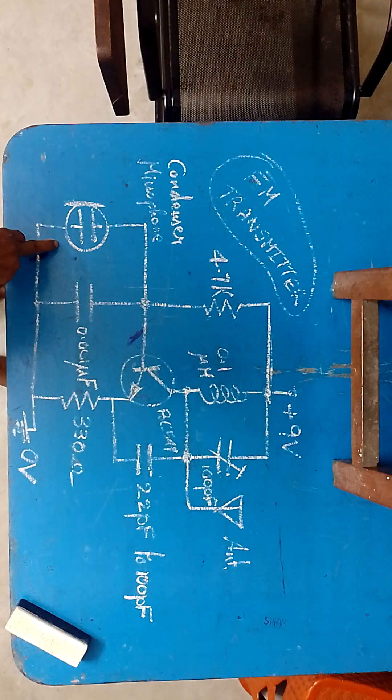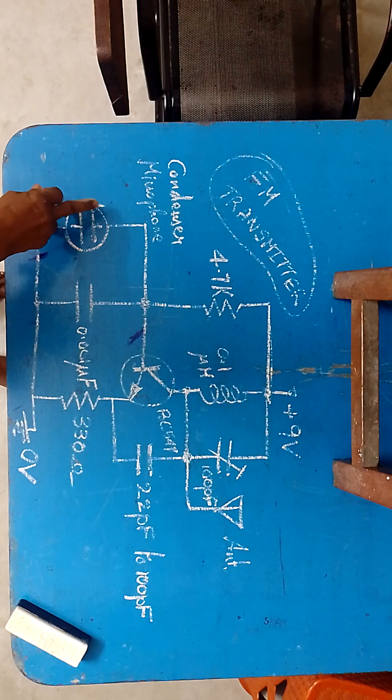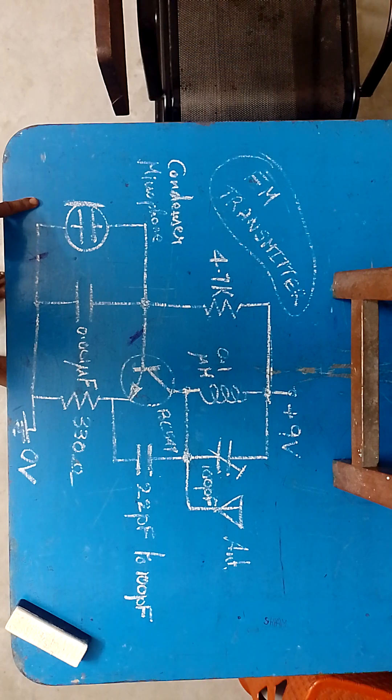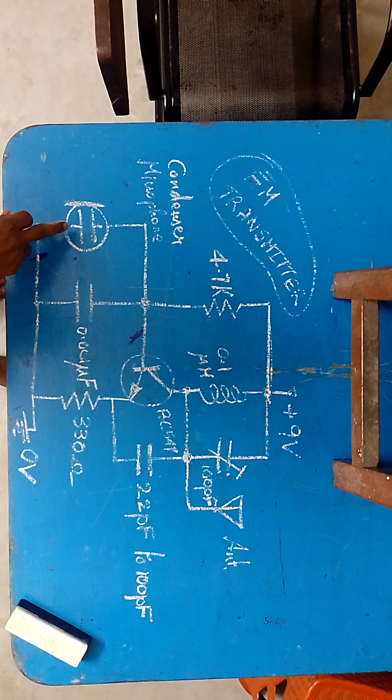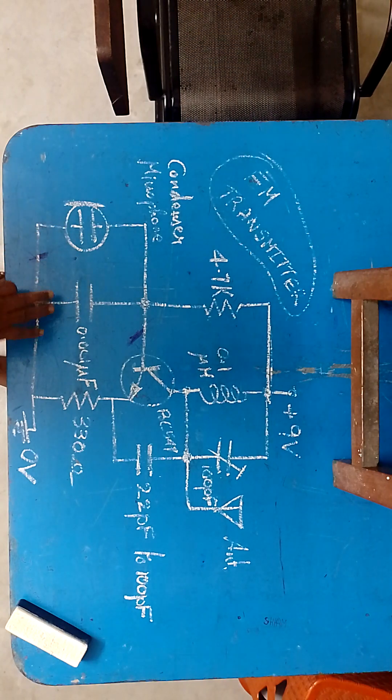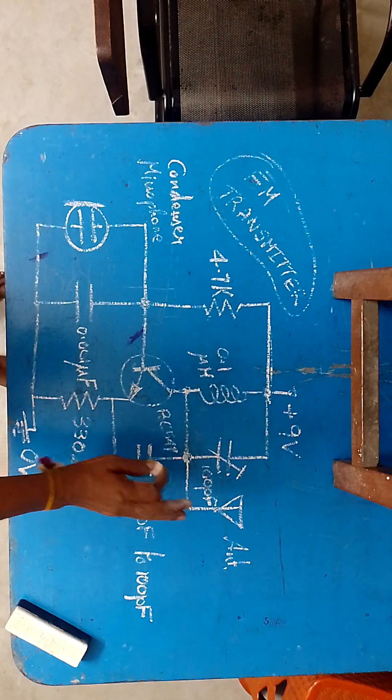Here we have the condenser microphone in parallel with 0.001 micro farad. So this condenser microphone, when the sound waves alters the frequency because one of the plates is fixed, another plate is movable. So therefore capacitance changes. Therefore the total capacitance changes and it will affect the resonant frequency of this circuit.